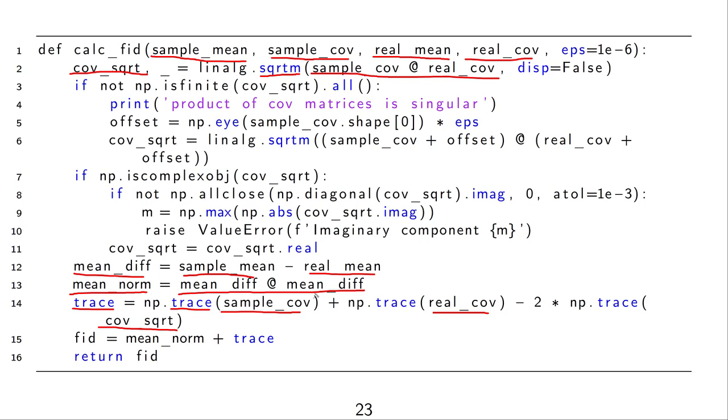Another intuition that is often used is the idea of police competing with art forgers. So, or maybe forgers that try to print fake money. The forgers, they try to create paintings or money that looks more and more realistic and the police try to distinguish the forged paintings or forged money from the real ones. In this analogy, the forgers would again be the generator and the police would be the discriminator.